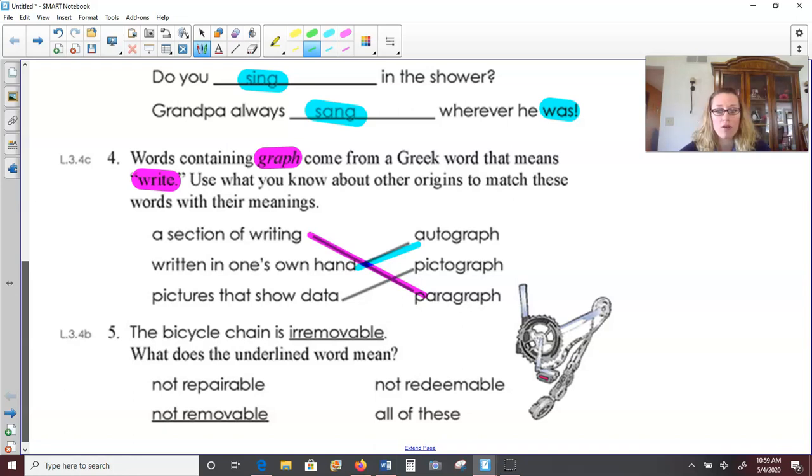Autograph written in one's own hand. So when you write something yourself, that would be an autograph. Auto means self. And then pictures that show data. That would be a pictograph. Graph is a way to show data. And so we learned about that in math class.